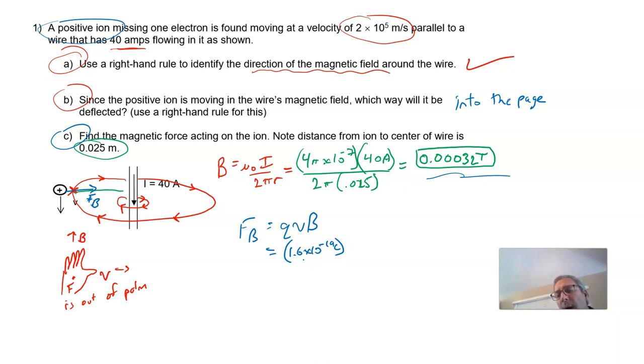Remember, if you pull one electron off, it's got a little bit more positive charge than negative charge. The velocity is 2 times 10 to the fifth meters per second. And the field strength was very weak, 0.00032 tesla.